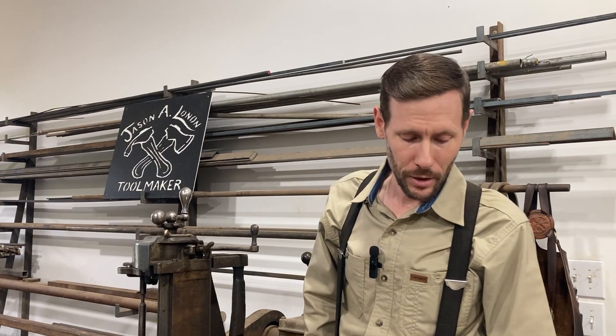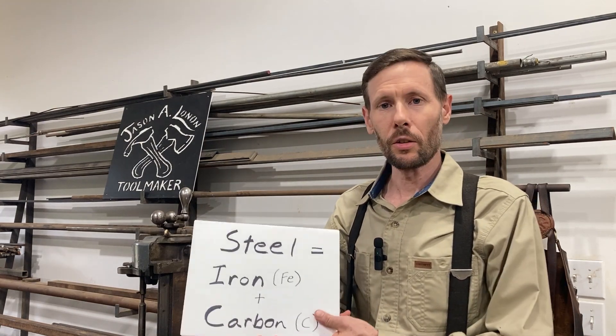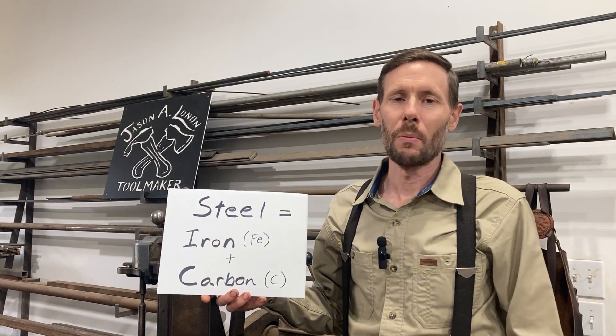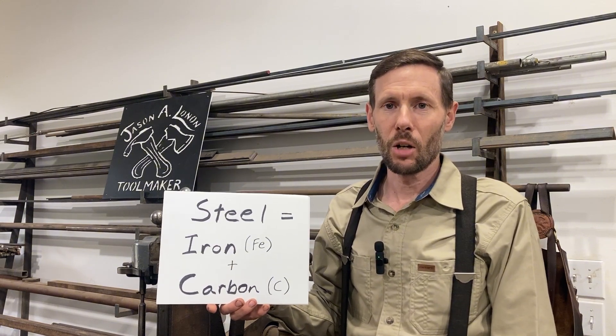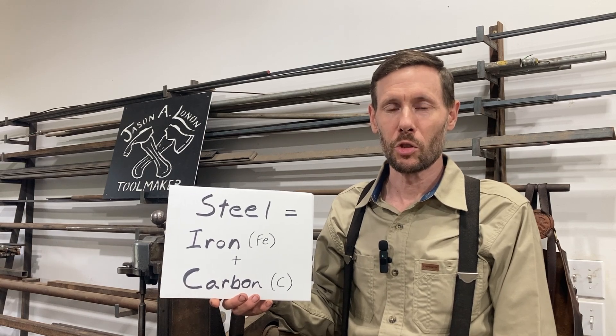The brief answer is steel is iron, chemical symbol Fe, plus carbon, chemical symbol C. So all steels — no matter whether it's a tool steel, alloy steel, or stainless steel — has at least these two elements, iron and carbon. The vast majority of steel composition is iron; carbon is only a very small percentage, less than 2% carbon content in steel, all the way down to just a trace of 0.05%. That's all steel is: iron plus carbon.